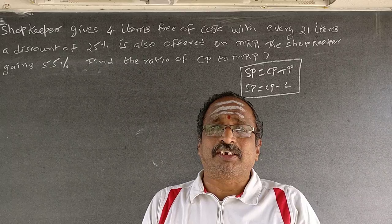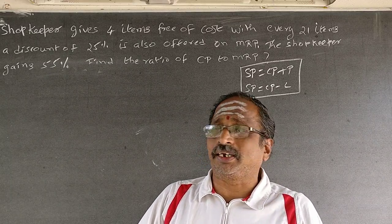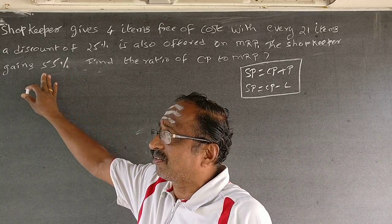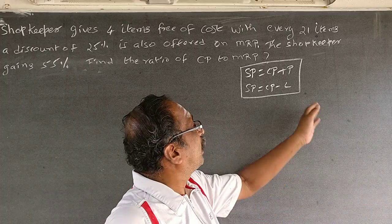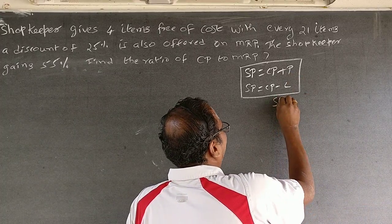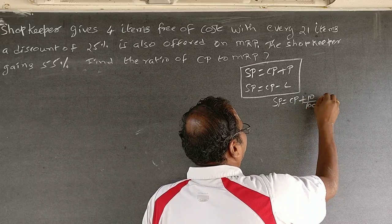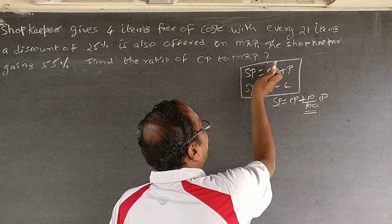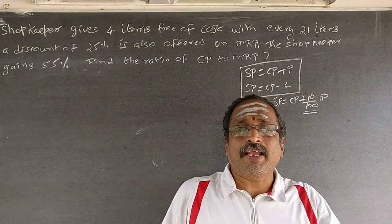By default, if profit percentage is mentioned without any qualifier, it is always on cost price. For example, a 10 percent profit means selling price equals CP plus 10 by 100 of CP. So the profit is always calculated on cost price.